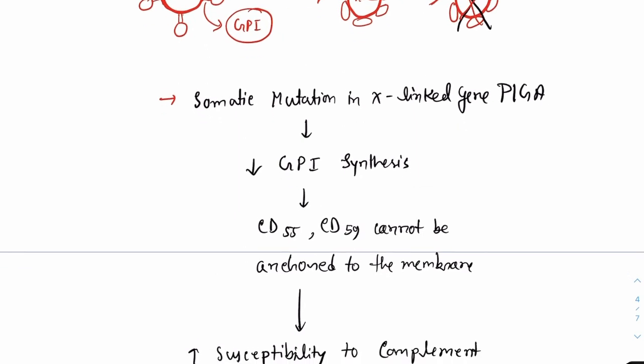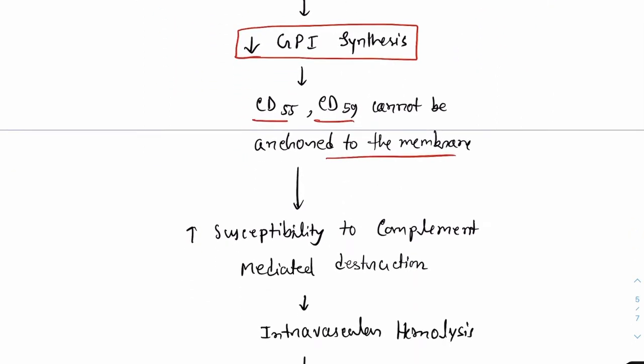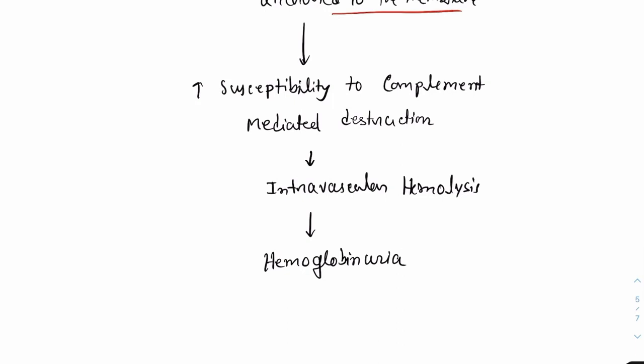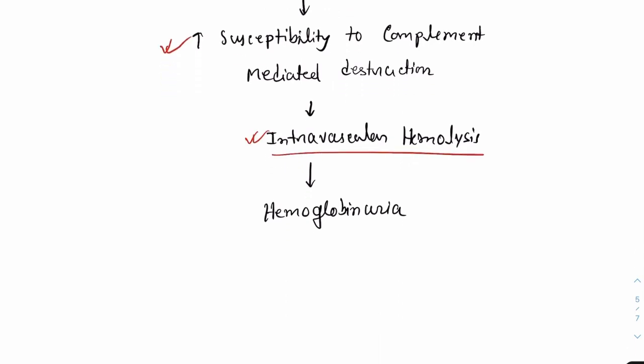Now what happens in PNH is that there is somatic mutation in the X-linked gene PIGA and because of the mutation in PIGA, there is reduced synthesis of the GPI-anchored protein. Because of the reduction in GPI protein, CD55 and CD59 cannot be anchored to the membrane of the RBC thereby resulting in increased susceptibility to complement mediated destruction leading to intravascular hemolysis and thereby leading to hemoglobinuria.